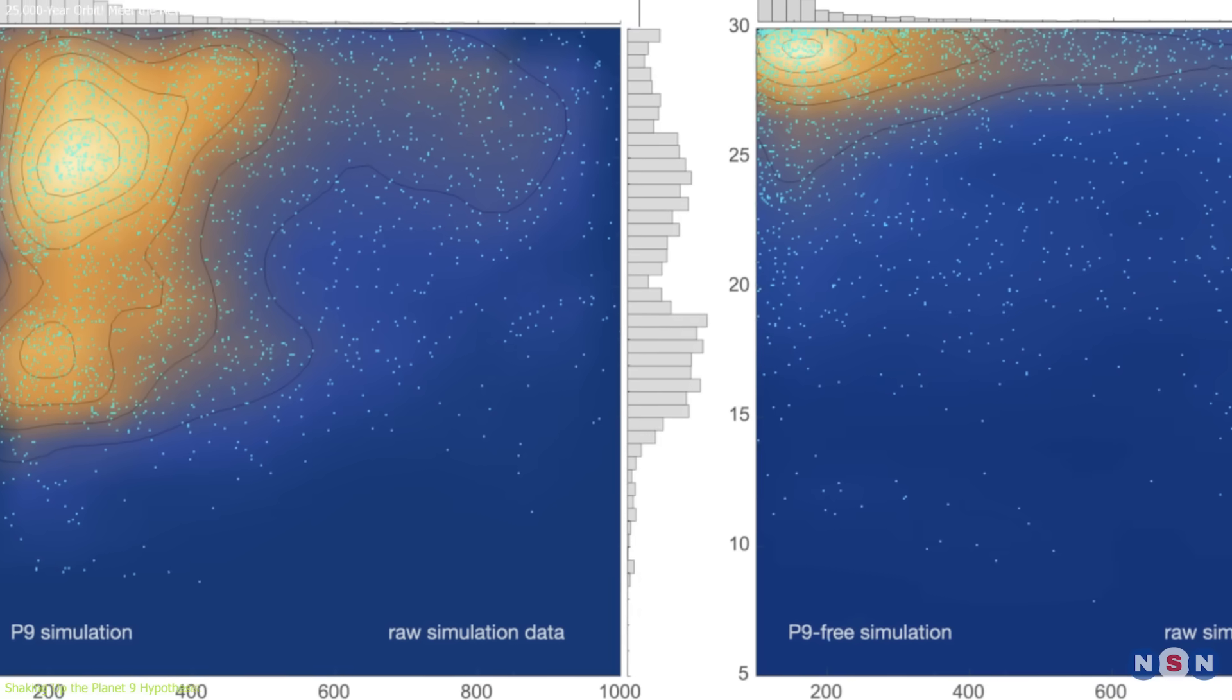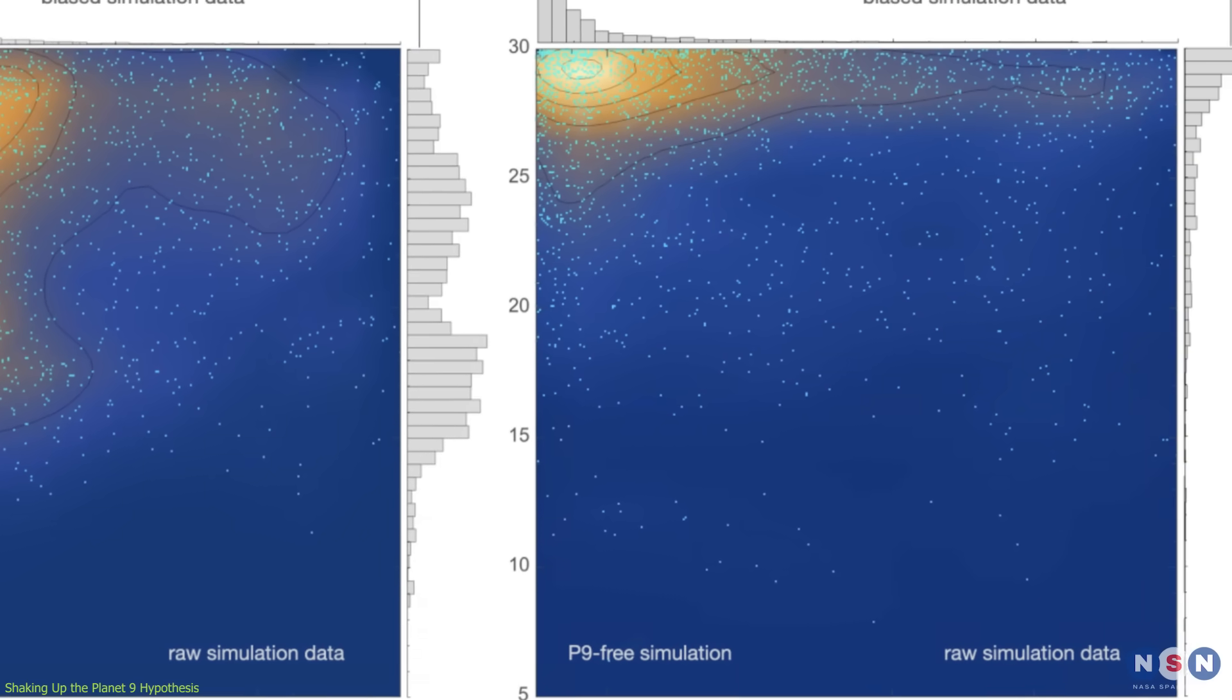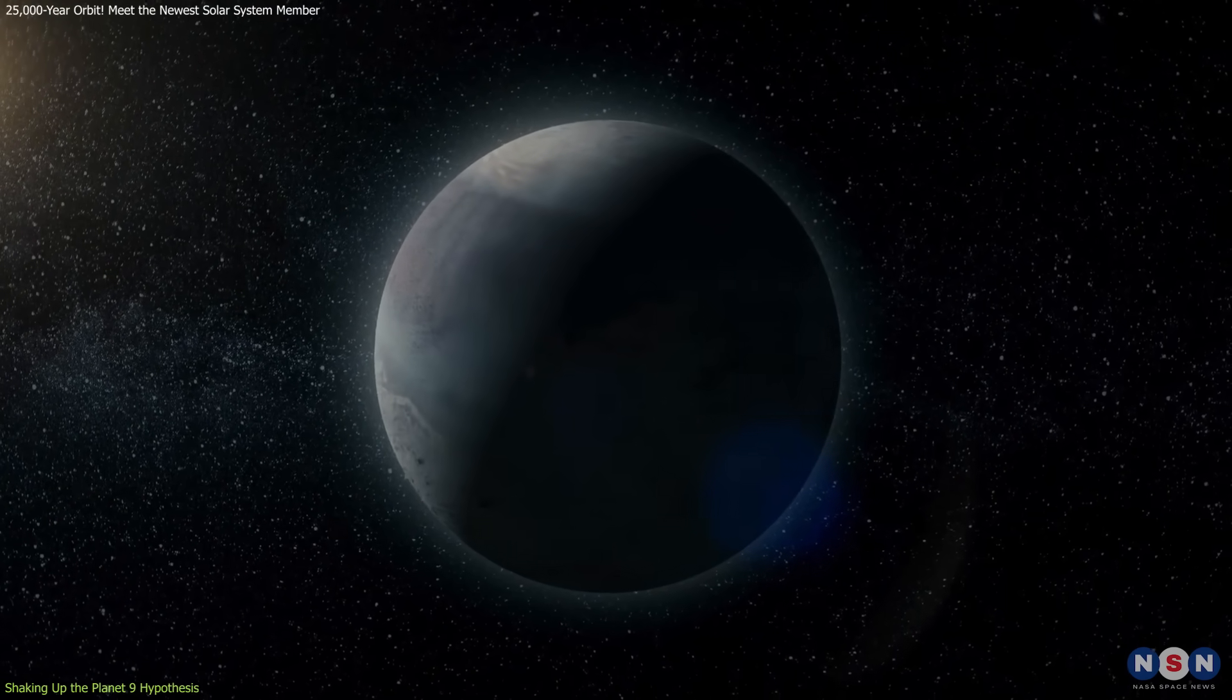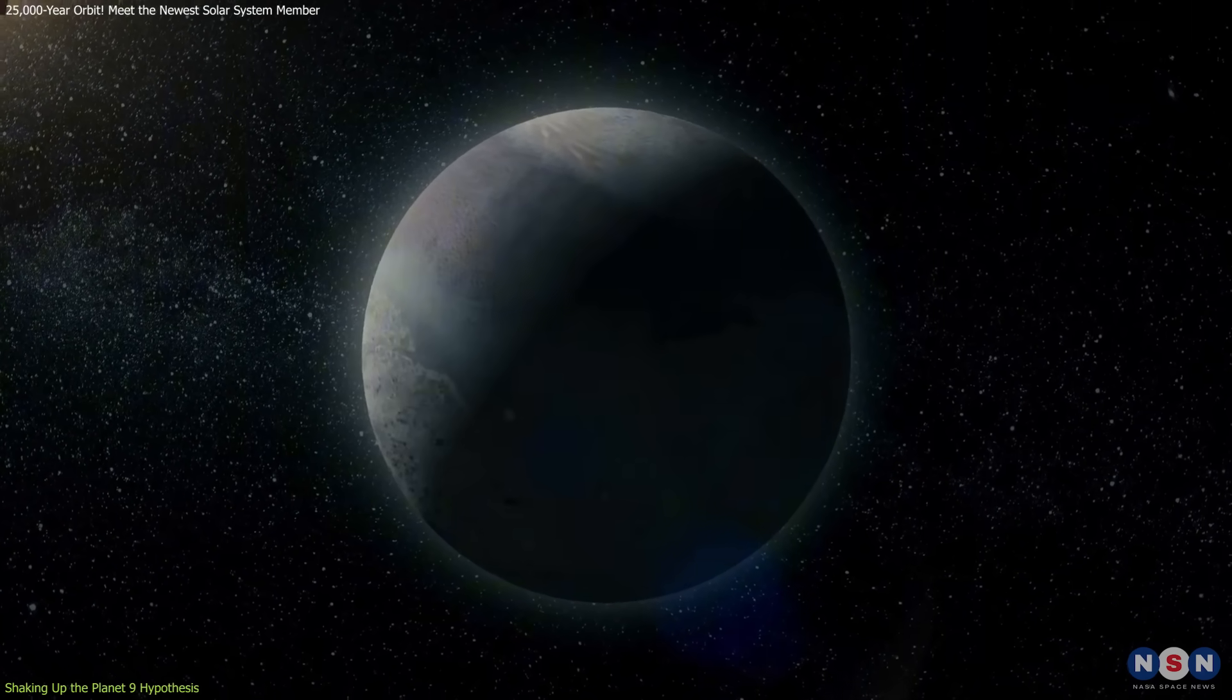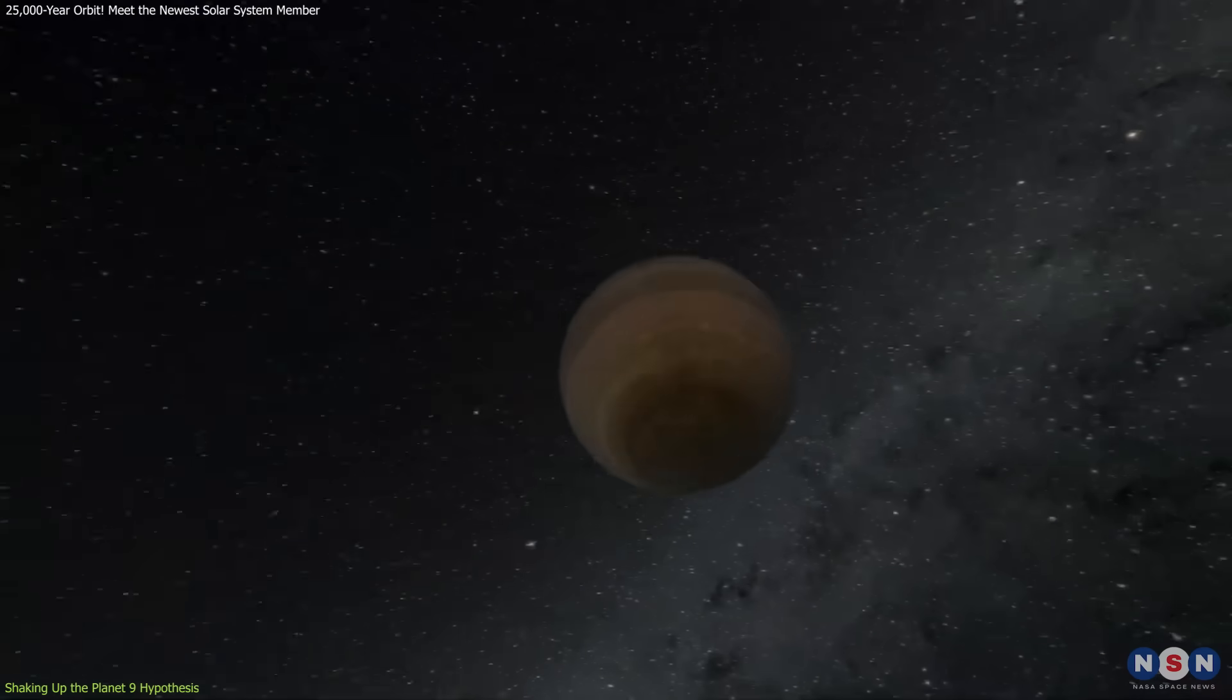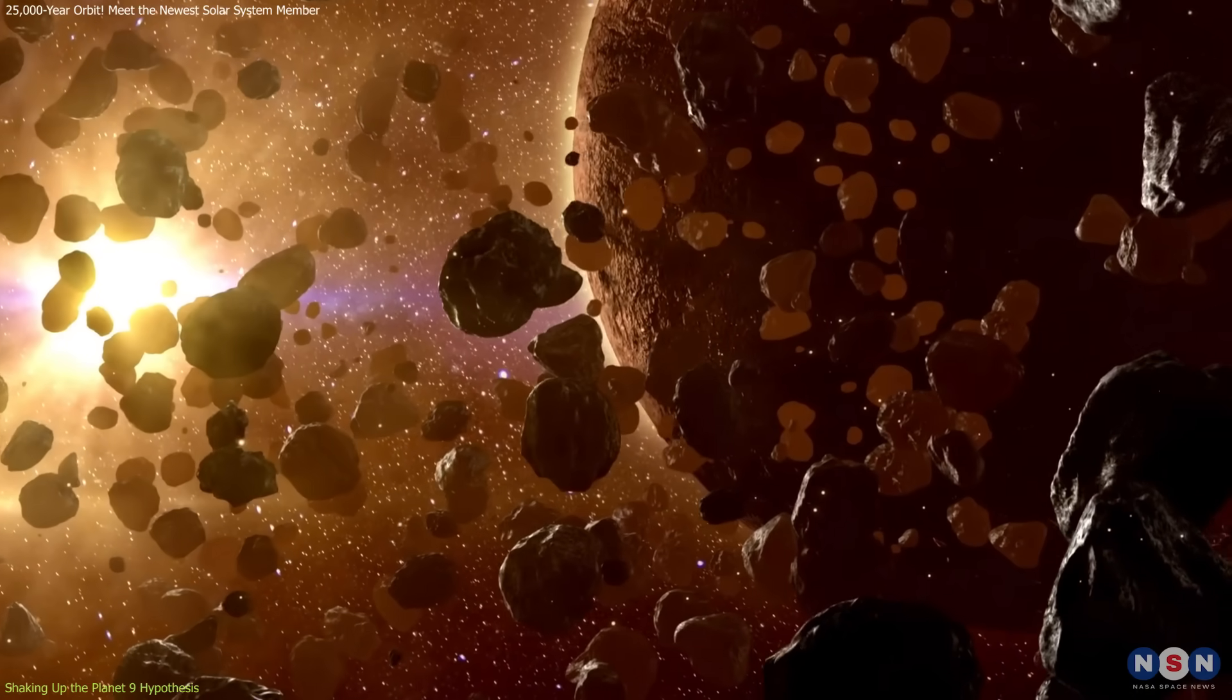The misalignment has serious implications. According to simulations, if Planet 9 did exist and had the mass and orbit currently proposed, it would likely have destabilized this TNO's path, possibly ejecting it from the solar system over time. That hasn't happened, which casts doubt on the planet's proposed influence or suggests that the actual dynamics are far more complicated than initially assumed.